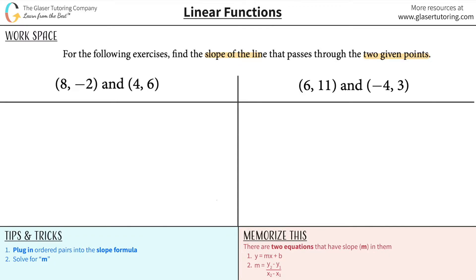Alright, so remember, slope is generally found in two formulas. Take a look down here on the bottom right. Slope is found in the equation for a linear line, y equals mx plus b. Slope is also found in what I'm going to call the slope formula.